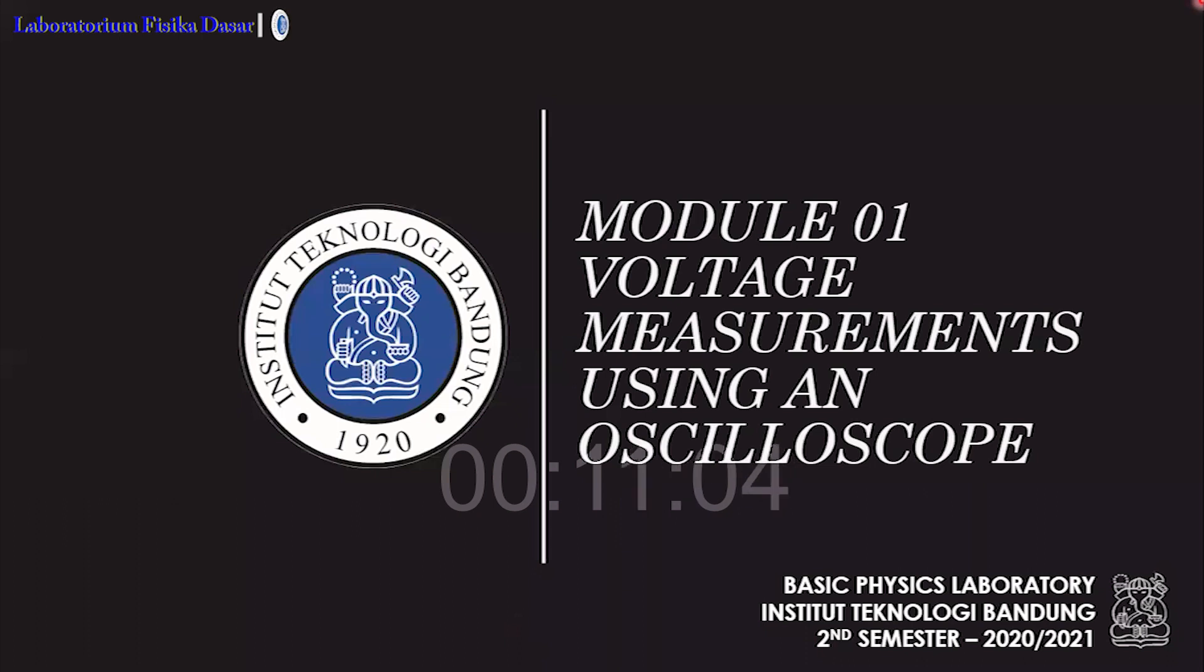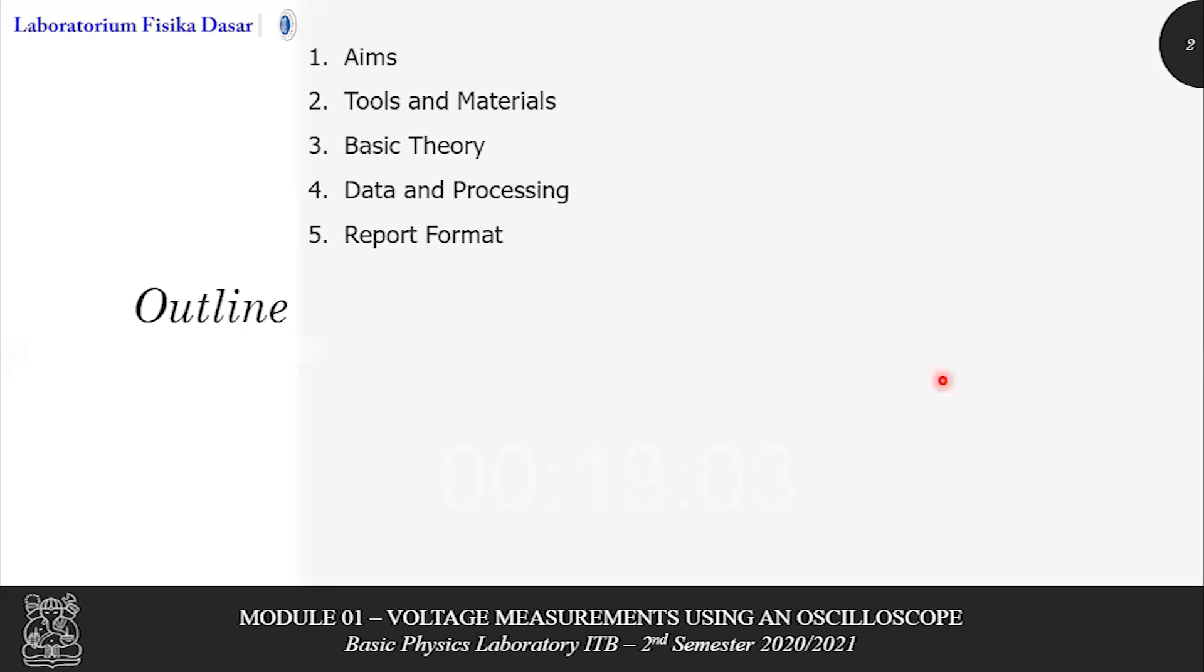Welcome to segment 3 of module 1, voltage measurement using an oscilloscope. These are the outlines for this segment: the first one is aims, the tool and materials, DC theory, data processing, and report form.